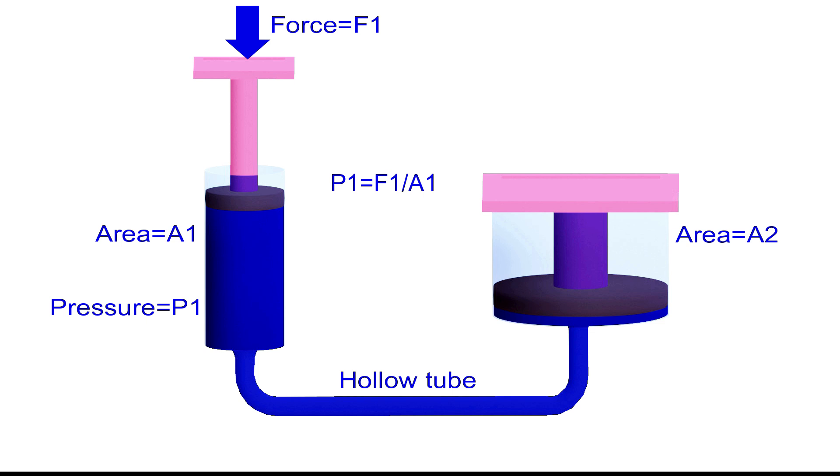This develops a pressure of F2 by A2 on the larger cylinder. Since the system is confined, Pascal's Law is valid. So we can say that pressure at smaller cylinder is equal to the pressure at larger cylinder.